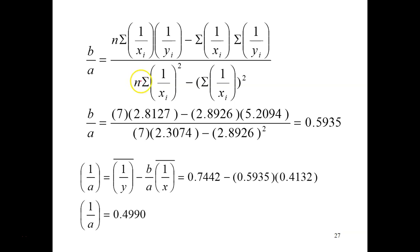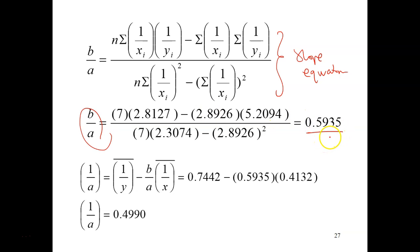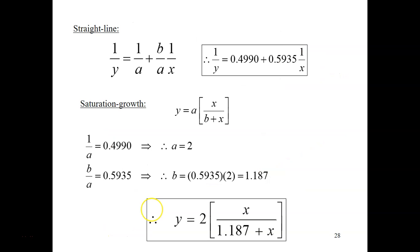For the slope, use the same slope equation as before — substitute all the calculated values and you will get the slope as 0.5935. For the intercept, substitute all the values again and you will get the intercept as 0.4990. Substitute your intercept and slope back into the linearized saturation growth rate equation to arrive at the linearized fitted equation.